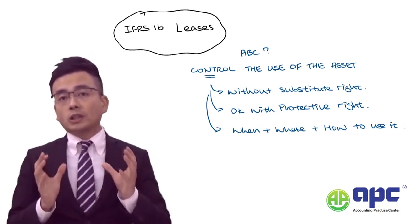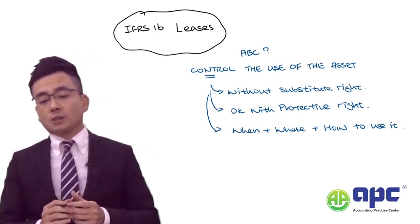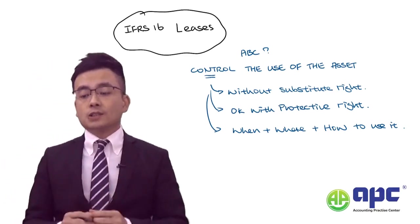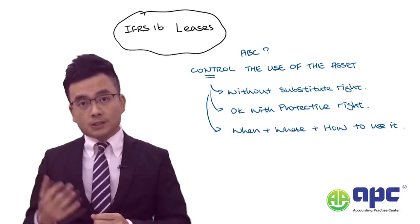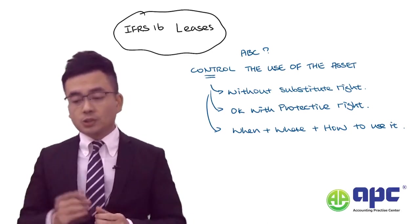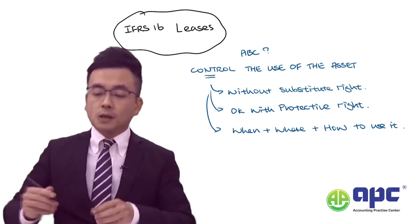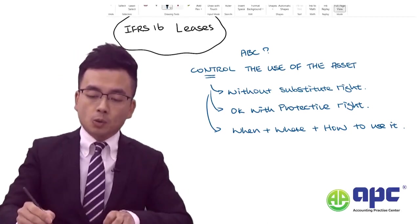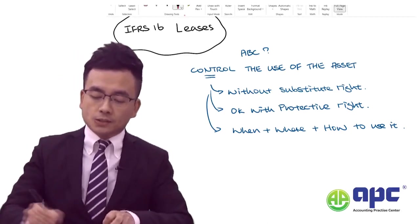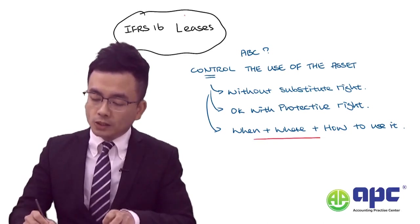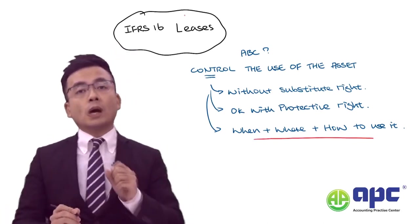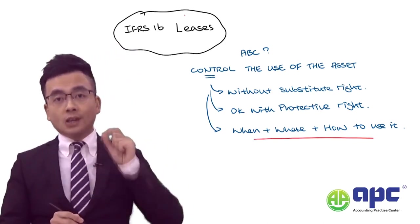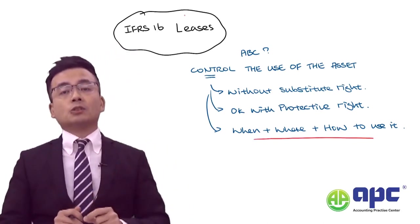According to IFRS 16, the circumstances in which we can control the use of an asset are very important. Specifically, we must be able to decide when to use it, where to use it, and how to use it.